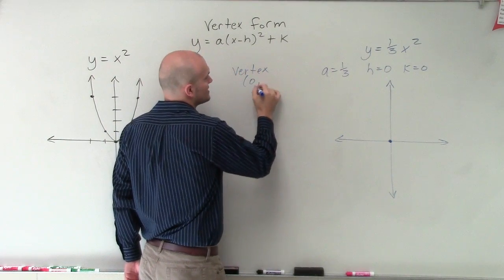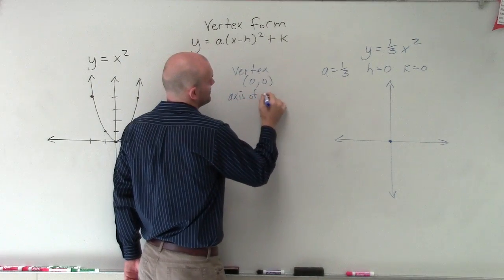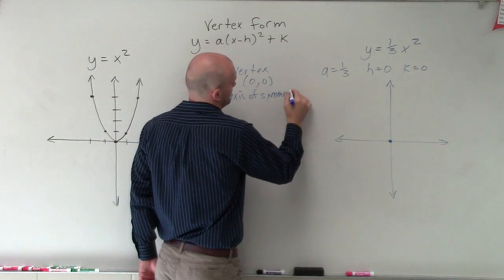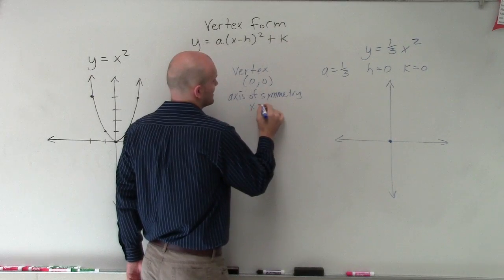So my vertex is at (0, 0), and my axis of symmetry is also at x equals 0.